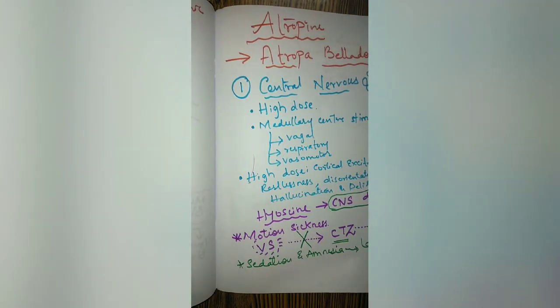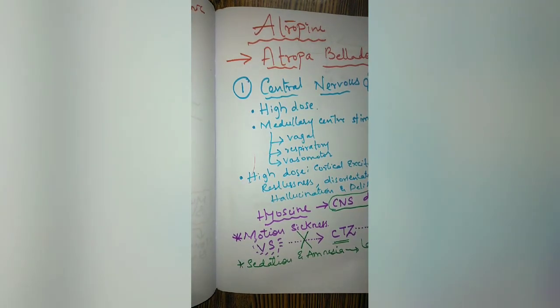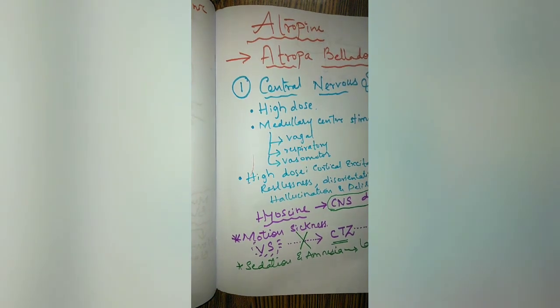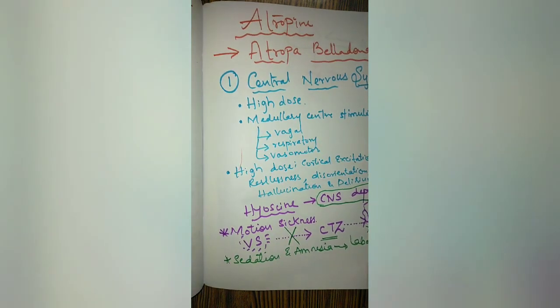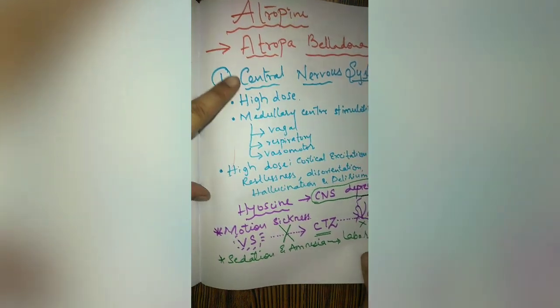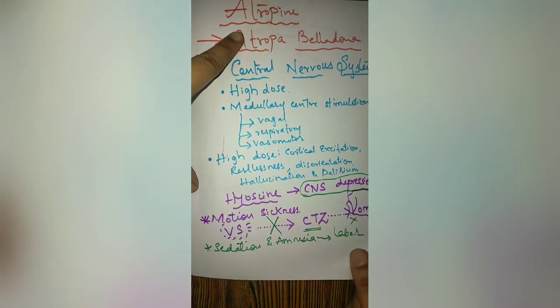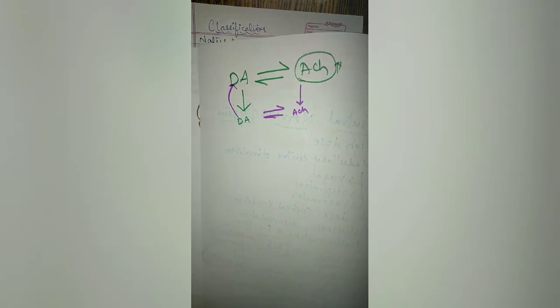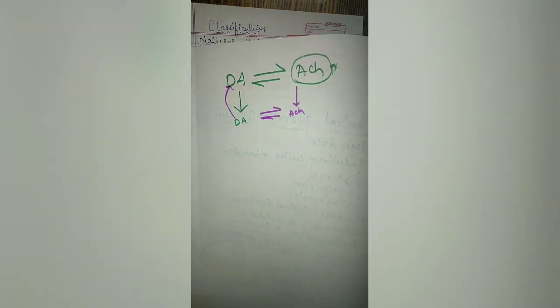These anti-parkinsonian agents can cross the blood-brain barrier to produce central action. Next, we will see the action of atropine in the eyes.